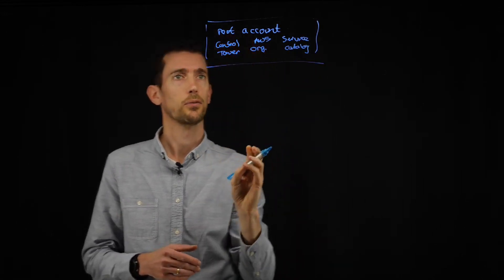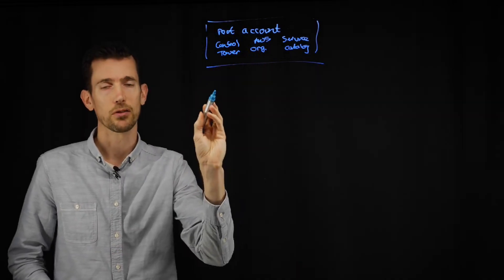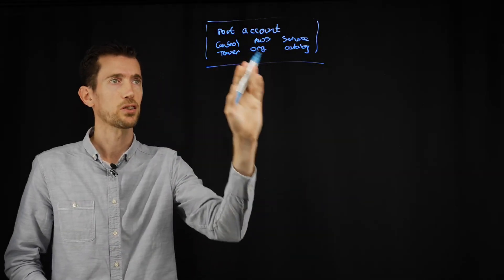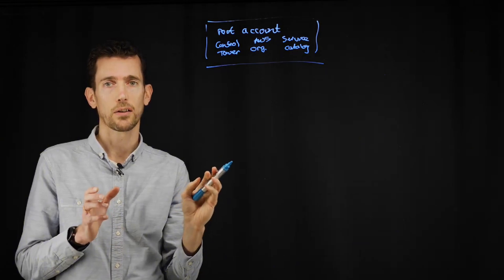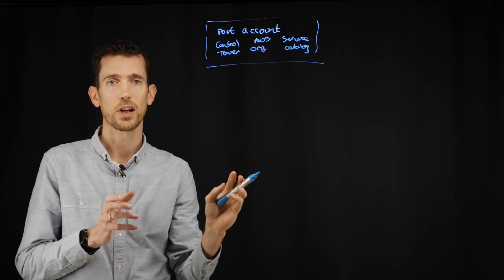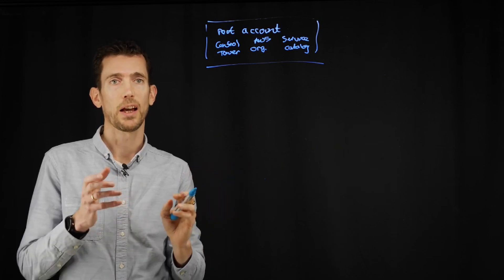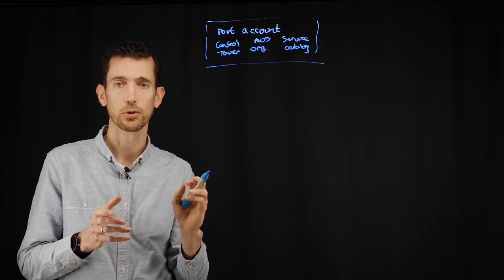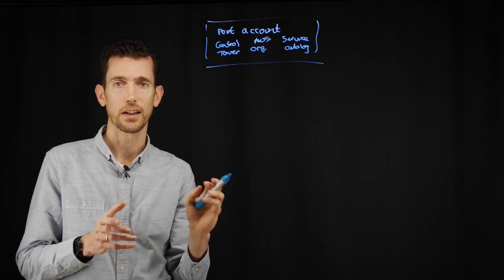So if we just talk about those for a minute, a control tower allows you to create your landing zone. It's specifically created by AWS to support landing zones and allow changes to be made and really helps with your landing zone implementation.